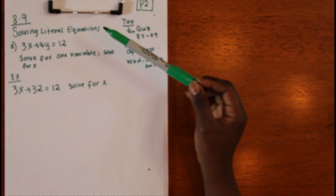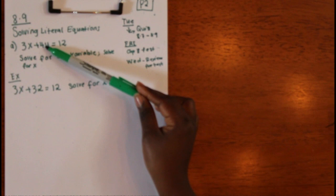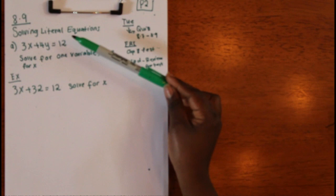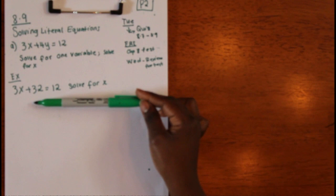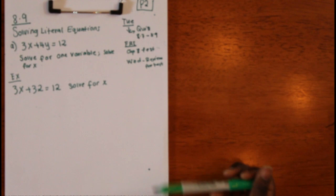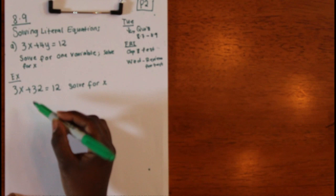Section 8.9 is about solving literal equations. This is where you're given more than one variable — sometimes even more than two — and you're asked to solve for one of them. For instance, in this equation I'm being asked to solve for X. Let me recap how we could solve for X in this simpler example first, then we'll move on.